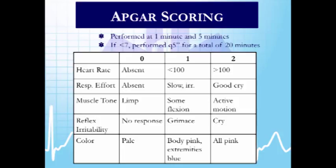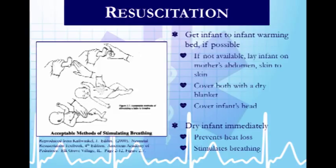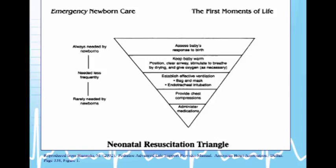APGAR scores are measured at one minute, five minutes, and ongoing every five minutes up to 20 total minutes if active resuscitation is needed. Stimulating the baby — slapping the foot, rubbing the belly and chest — and the drying process is usually enough to wake the baby and prevent heat loss. Most normal births don't require anything more, though some may need airway positioning, bag-mask ventilation, chest compressions, or medications.